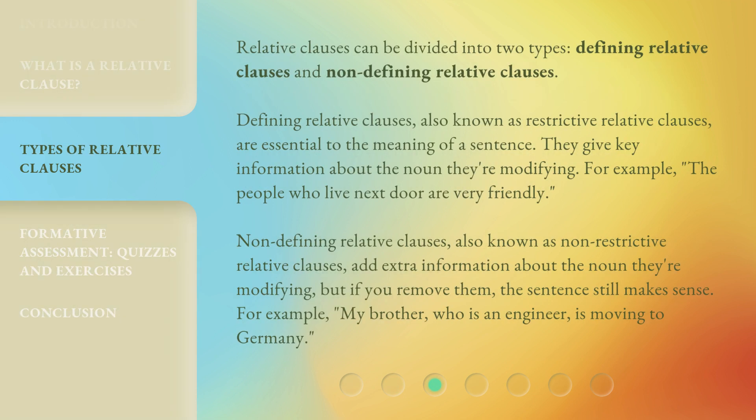Relative clauses can be divided into two types: defining relative clauses and non-defining relative clauses. Defining relative clauses, also known as restrictive relative clauses, are essential to the meaning of a sentence. They give key information about the noun they're modifying. For example: 'The people who live next door are very friendly.' Non-defining relative clauses, also known as non-restrictive relative clauses, add extra information about the noun they're modifying, but if you remove them, the sentence still makes sense. For example: 'My brother, who is an engineer, is moving to Germany.'